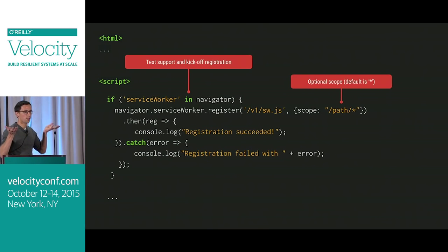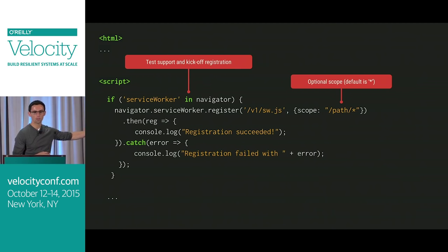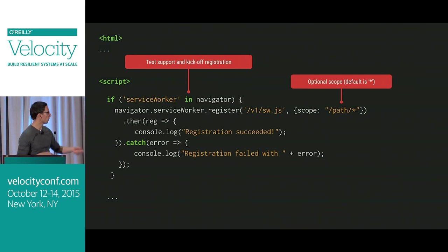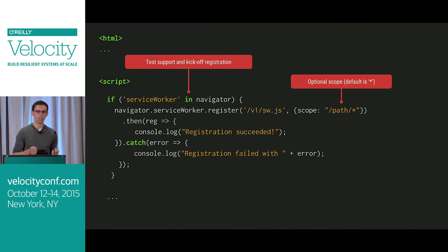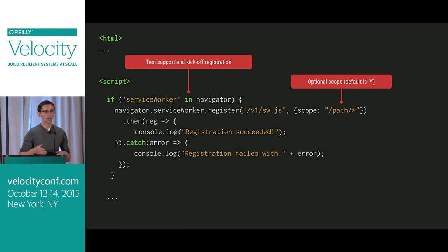So how do we register a Service Worker? You have a typical page — just your regular HTML. Service Worker is effectively an upgrade, an install process that you kick off in the background. Somewhere on your page you'll have this embedded: first test if Service Worker is supported, and if so, register a worker. The worker has to live on the same origin, so in this case we're registering v1.sw.js. You can also specify a scope — by default when you register a worker it takes over the entire origin, like slash star. But you can have multiple workers responsible for separate parts of your scope, for different apps running under different subdirectories.